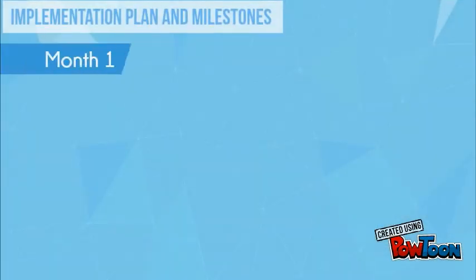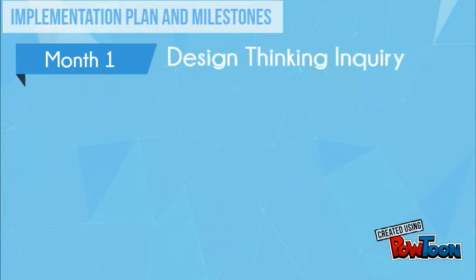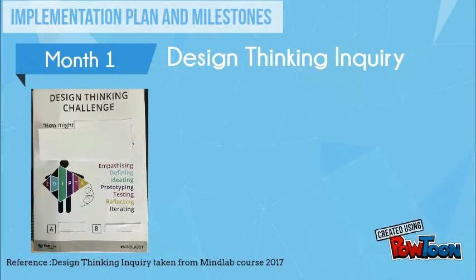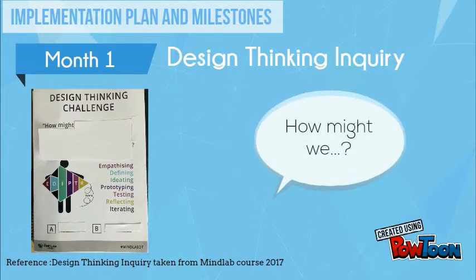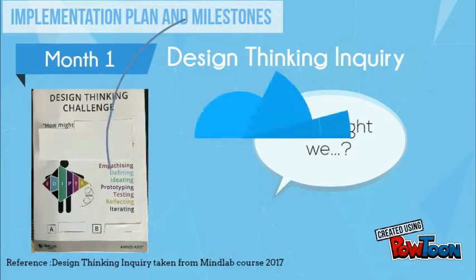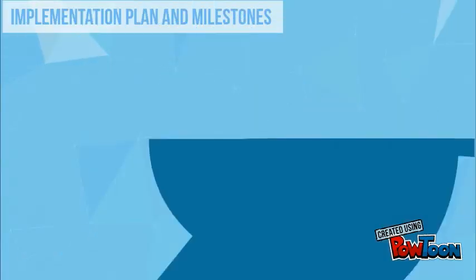In the first month our aim is to provide professional development to the staff with a design-thinking inquiry process in order to meet the needs of different areas of the school. We have initiated this already by asking 'How might we?' questions of our team for the purposes of this assignment. From the DTI process we aim to establish the individual area of need for other staff members.